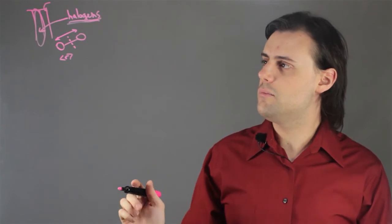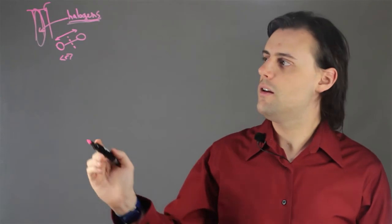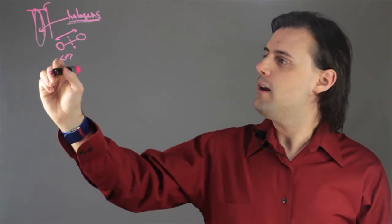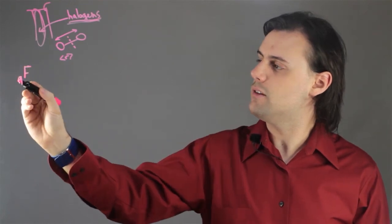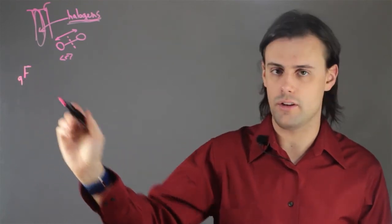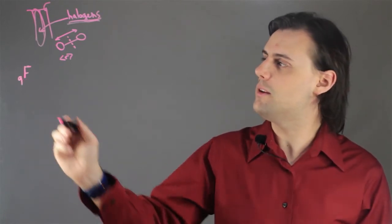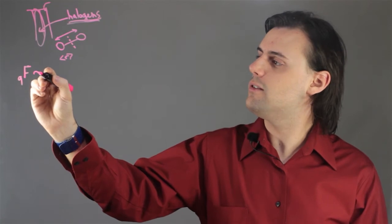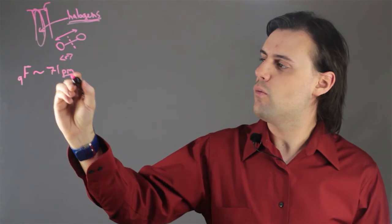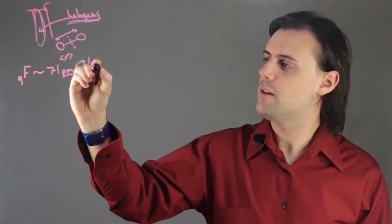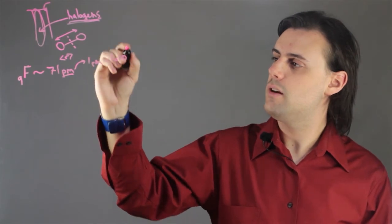So these can be experimentally determined using certain experiments, and we'll start with fluorine 9, where 9 represents the number of protons in the nucleus, hence its nuclear number in the periodic table of elements. It has a size of approximately 71 picometers, where one picometer is equal to 1 × 10^-12 meters—very, very small, it's a thousandth of a nanometer.